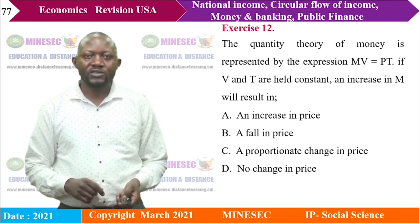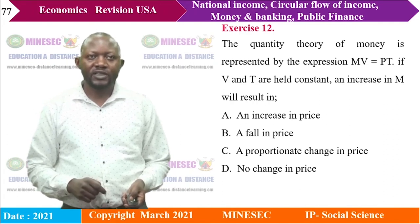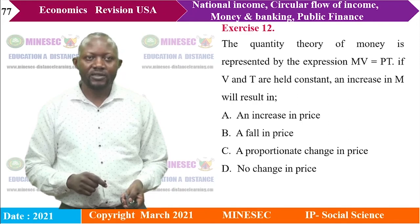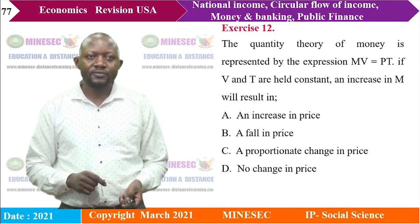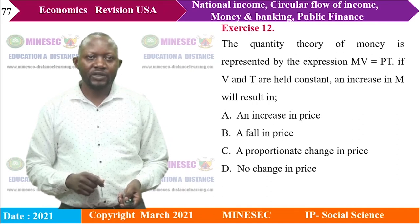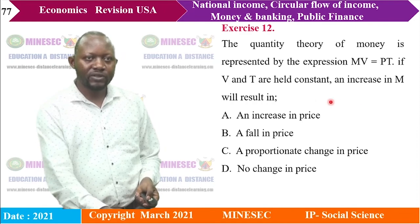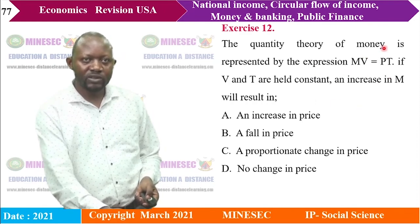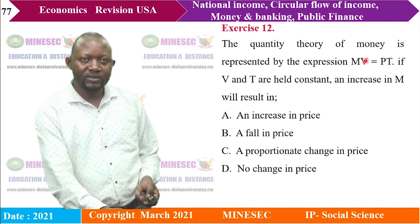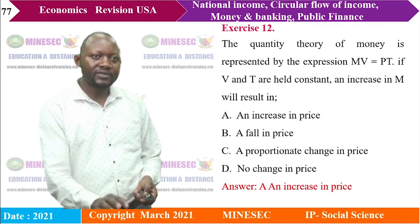Exercise 12: The quantity theory of money is represented by MV = PT. If V and T are held constant, an increase in M will result in: A) an increase in price, B) a fall in price, C) a proportionate change in price, D) no change in price. Since there is a direct relationship between M and P (with V and T constant), the answer is A — an increase in price.